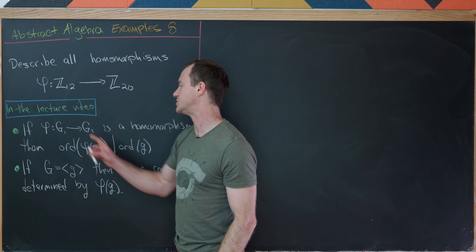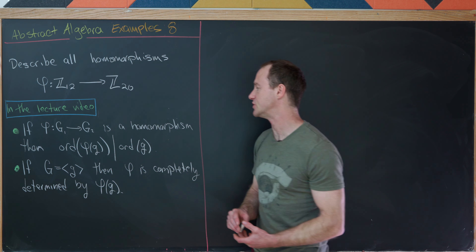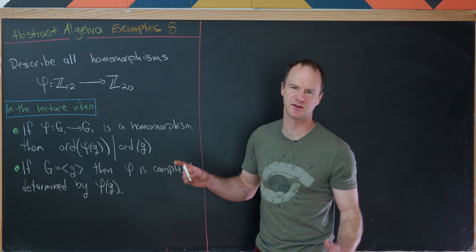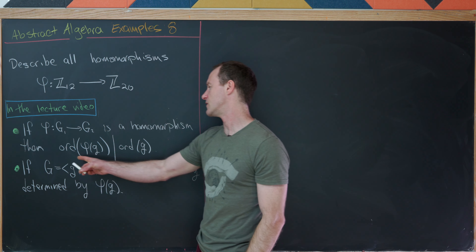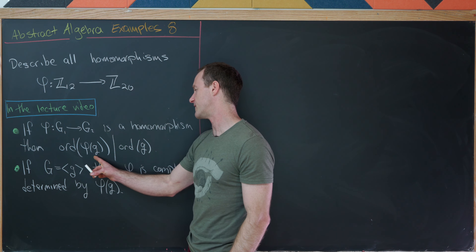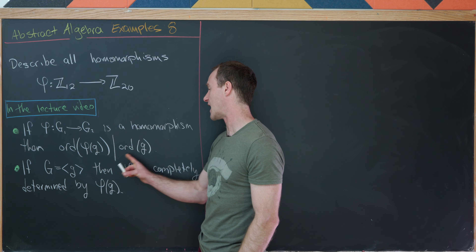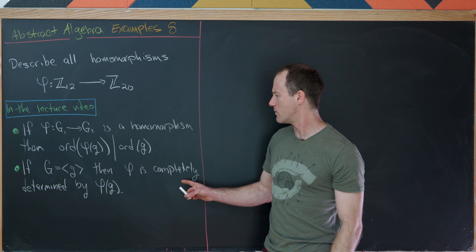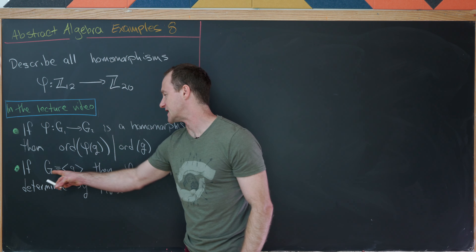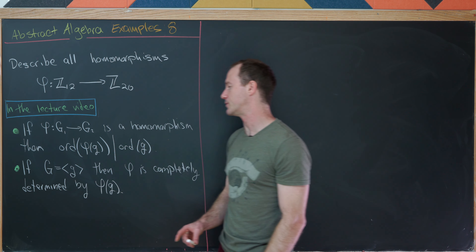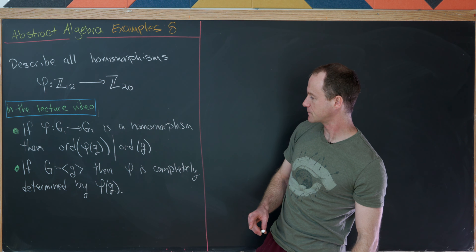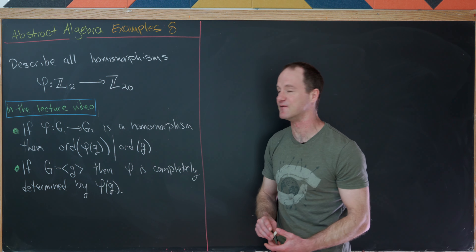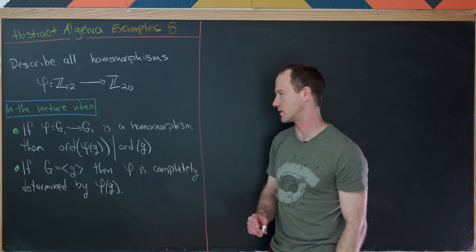If φ from G1 to G2 is a homomorphism, then — if this makes sense, so the orders are finite — the order of φ(g) must divide the order of g. And then one more thing: if G is a cyclic group generated by little g, then φ is completely determined by its value on that generator.